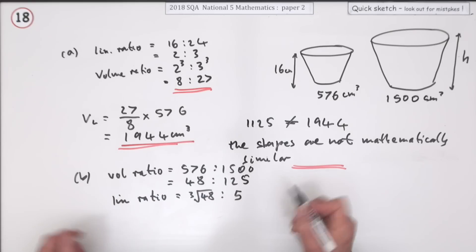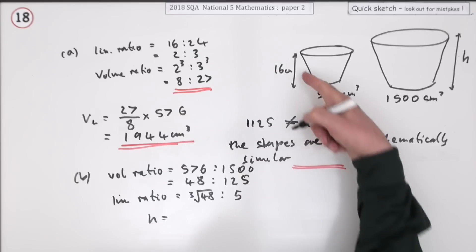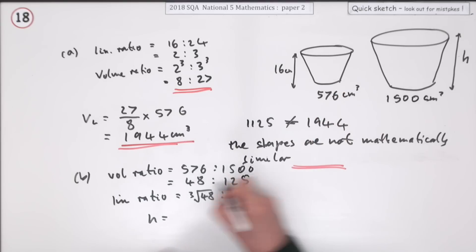I could have left it as the cube root of 125 if you like, but now that I know the linear ratio, you can work out the height. The height will be bigger, so I'm putting the bigger number on top. Maybe I will just go back with those: 125 over 48.